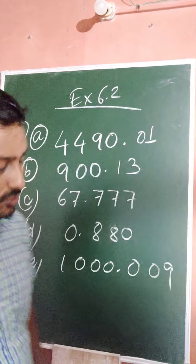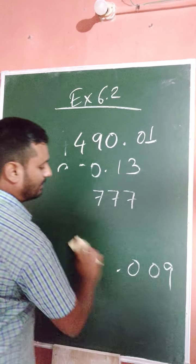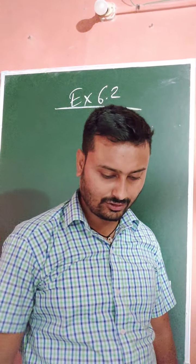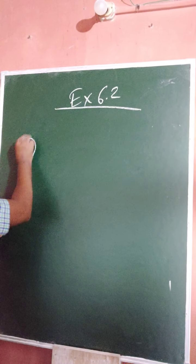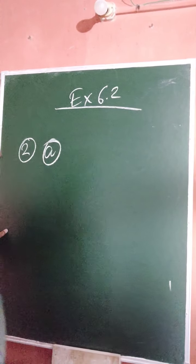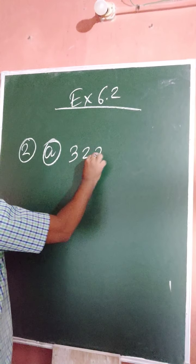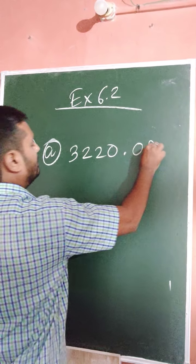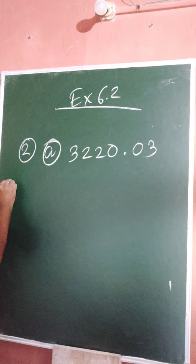Now come to question number two. Numbers are given and we have to write them in words. Write each of the following decimals in words. Part (a) is 3220.03.